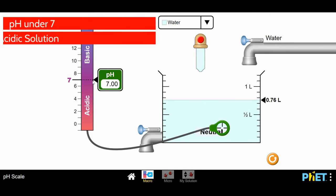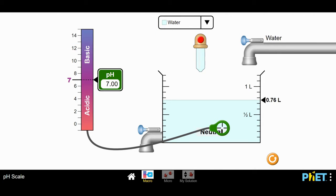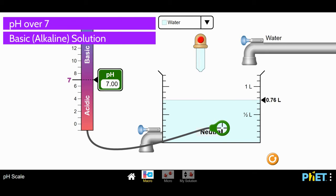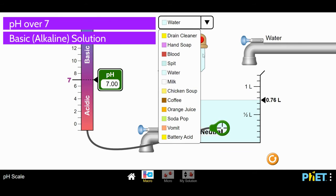If we have anything that measures under 7, it is a solution that we would identify as being acidic. If we have a solution that measures above 7, we would say it is a basic solution. Let's look at some of the different solutions here.